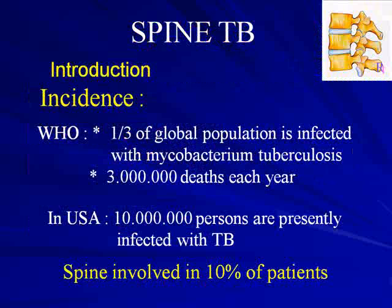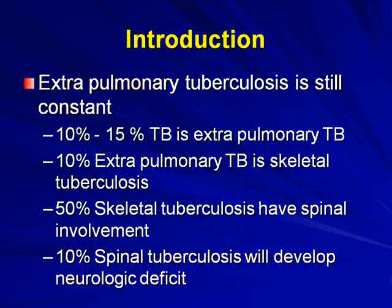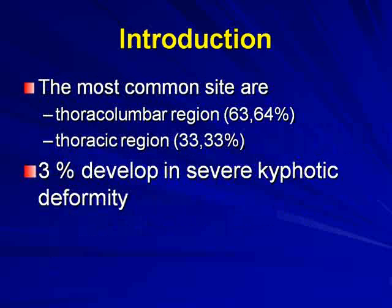Regarding TB spine, according to WHO, one-third of the global population is infected with Mycobacterium tuberculosis. Every year, 3 million people die from this disease. In the US, 10 million persons are infected with TB. In the spine, it involves almost 10% of patients. Extrapulmonary TB incidence is between 10% to 15%, and 10% of extrapulmonary TB is skeletal tuberculosis. Half of extrapulmonary tuberculosis has spinal involvement, and 10% of spinal tuberculosis will develop neurologic deficit. The most common site is the thoracolumbar region — almost two-thirds of patients — and 3% develop severe kyphotic deformity due to neglect in seeking medical attention.